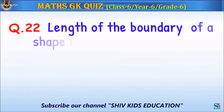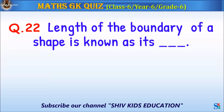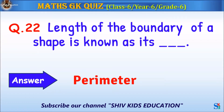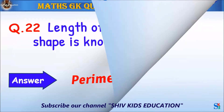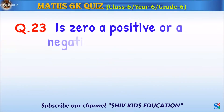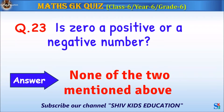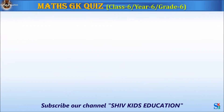Question 22: The length of the boundary of a shape is known as its what? The answer is perimeter. Question 23: Is 0 a positive or negative number? The answer is neither — none of the two mentioned above. Question 24: Which of these is not a unit of length? The answer is milliliter.